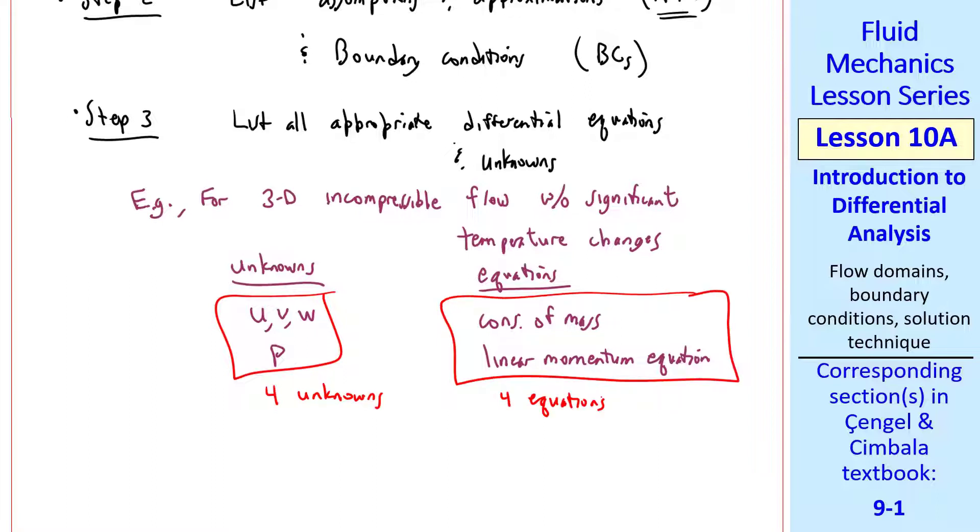and we add these up, and we have 4 equations. It looks like 2 equations, but the momentum equation is a vector equation, which is actually 3 equations, whereas conservation of mass is 1 equation, a scalar. If we have 4 unknowns and 4 equations, with appropriate boundary conditions, we should be able to solve this problem.